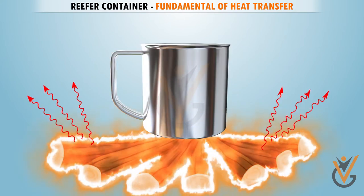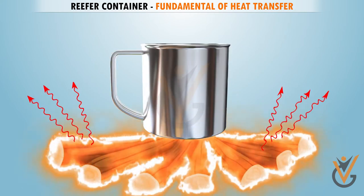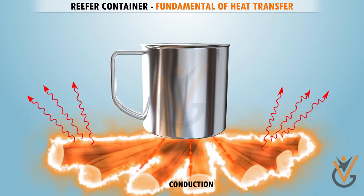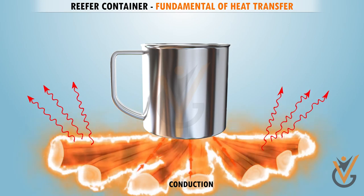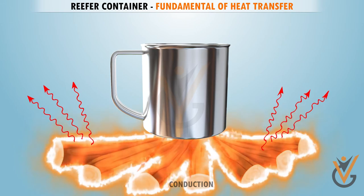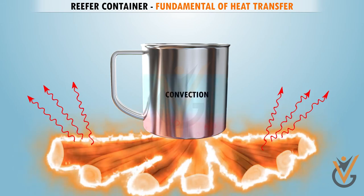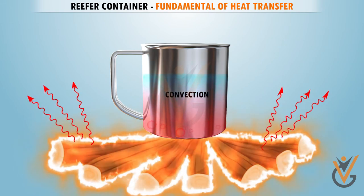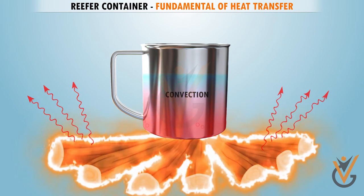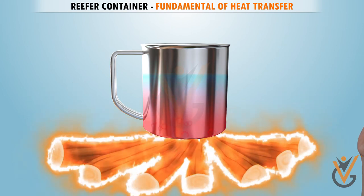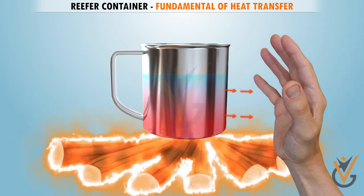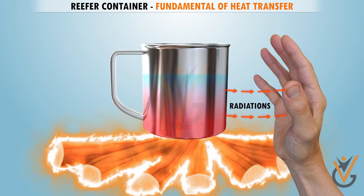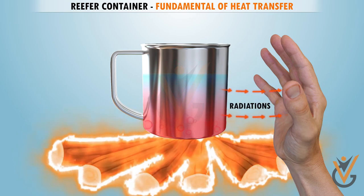Let's take an example of boiling water on the stove. From the stove, heat conducts to the pot as it is directly in contact. Due to convection, all the water particles receive heat. If you bring your hand very close to the side of the pot, you will feel a little warmth. This is because radiation is coming from the pot.